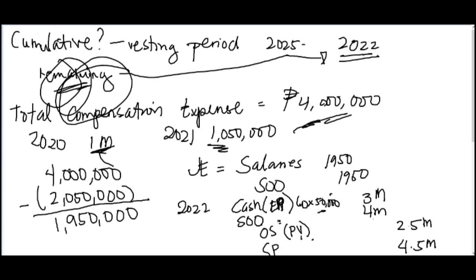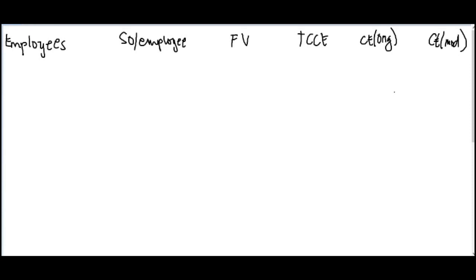That's acceleration of vesting. Okay, now we now go to the last condition which is the modification of condition, whether it is favorable or unfavorable modification. So the question is, when is it favorable, favorable to the employee? It's favorable when the exercise price or option price goes down and the fair value goes up. That's favorable because it's more affordable. When is it unfavorable? Well, when it's the opposite. So now we're going to compute the scenarios wherein the terms change.